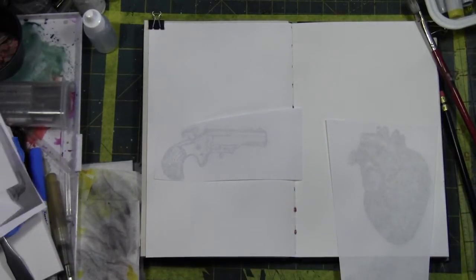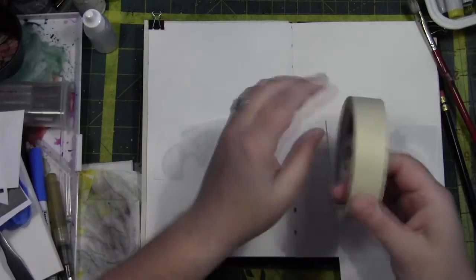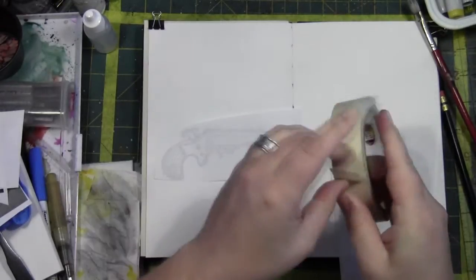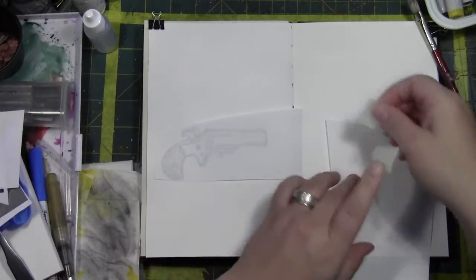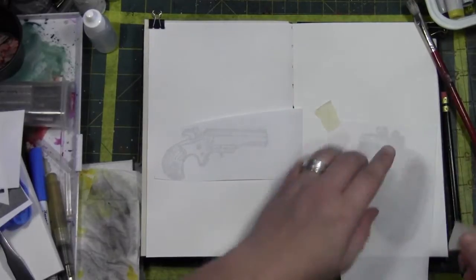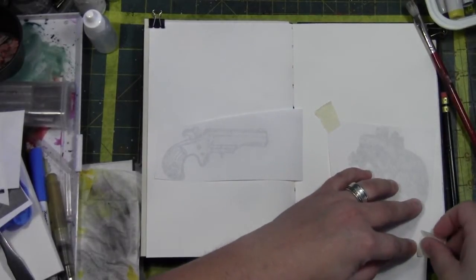I'm going to place the heart there. And you're going to use the masking tape to just hold it in place. Now I'm doing diagonal corner to corner to hold that in place.